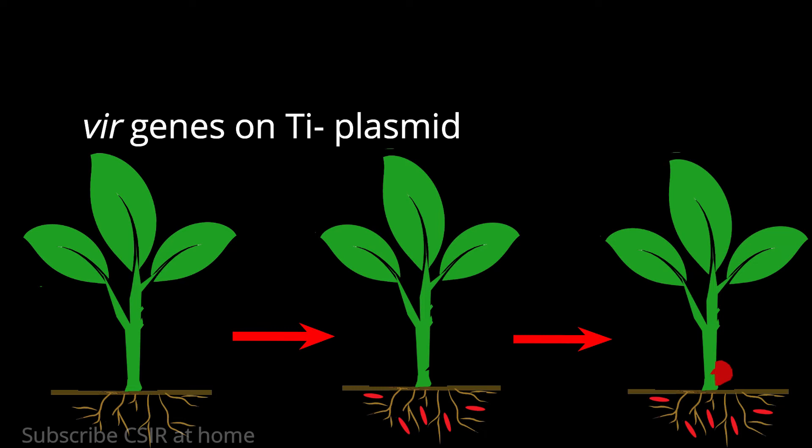The Ti plasmid — tumor inducing plasmid — is found only in virulent Agrobacterium strains. The products of the virulence genes are essential for the gene transfer and integration of the T-DNA region into the genome of the plant cell. T-DNA is the transfer DNA, which we will study in more detail shortly.